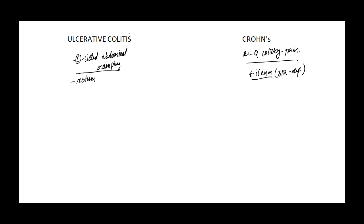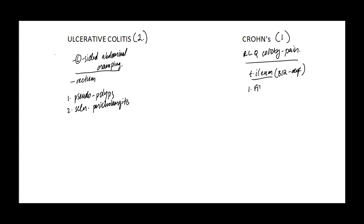The main thing to remember is the gross features and complications, and I'm going to make it very simple. Ulcerative Colitis has two words. Crohn's Disease has one word. So when asked about gross features — which one has Pseudopolyps? Two words: Ulcerative Colitis. Which has sclerosing pericholangitis as a complication? Which has fistulas? Which has stones — renal stones, etc.?